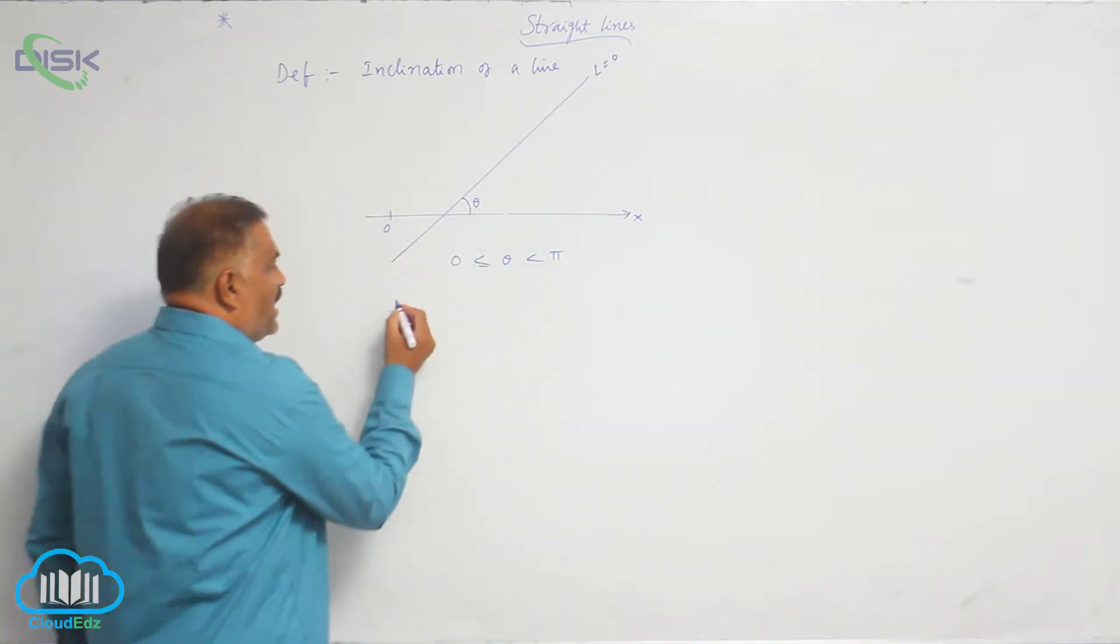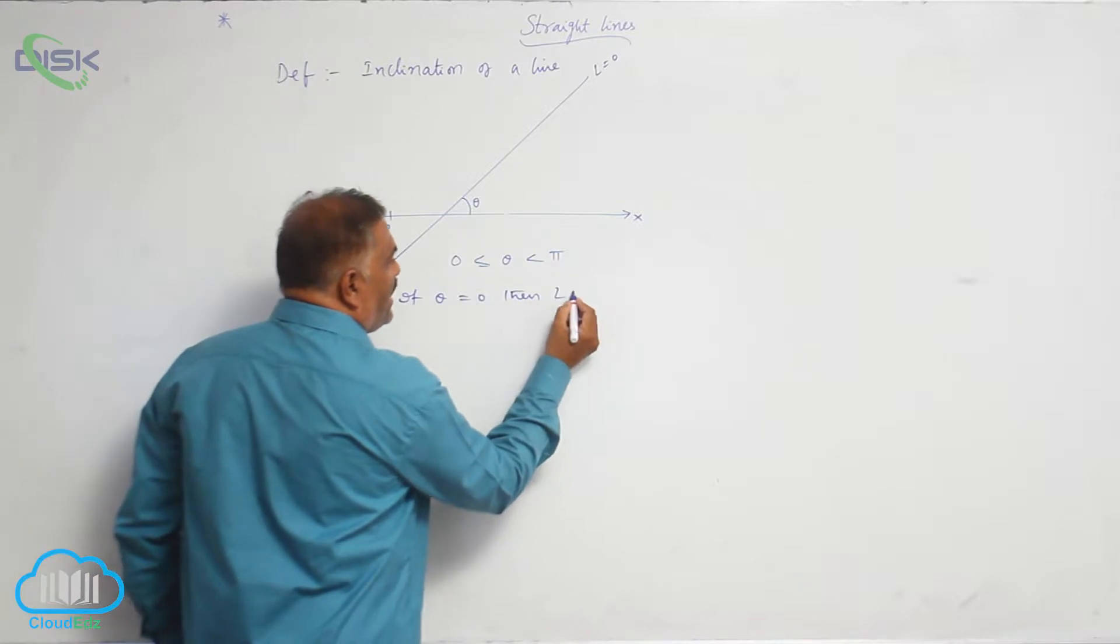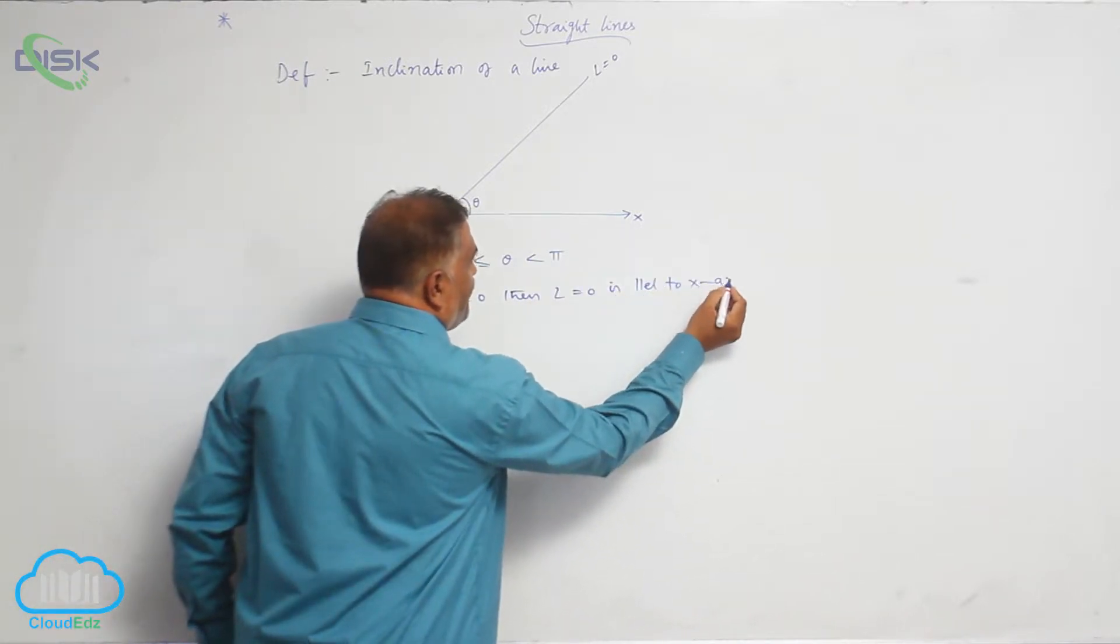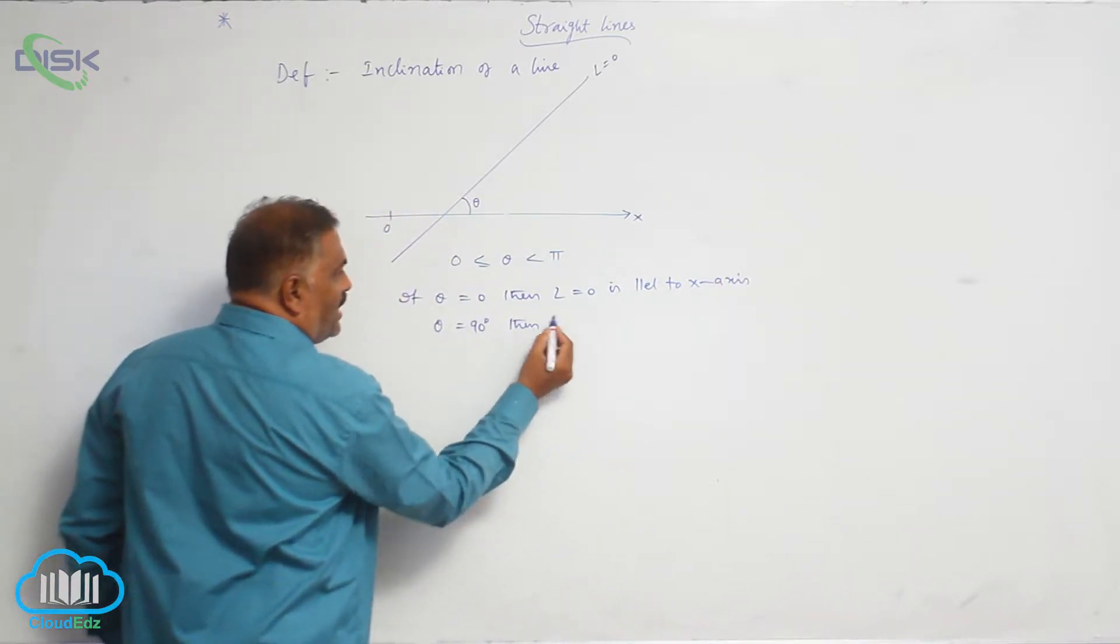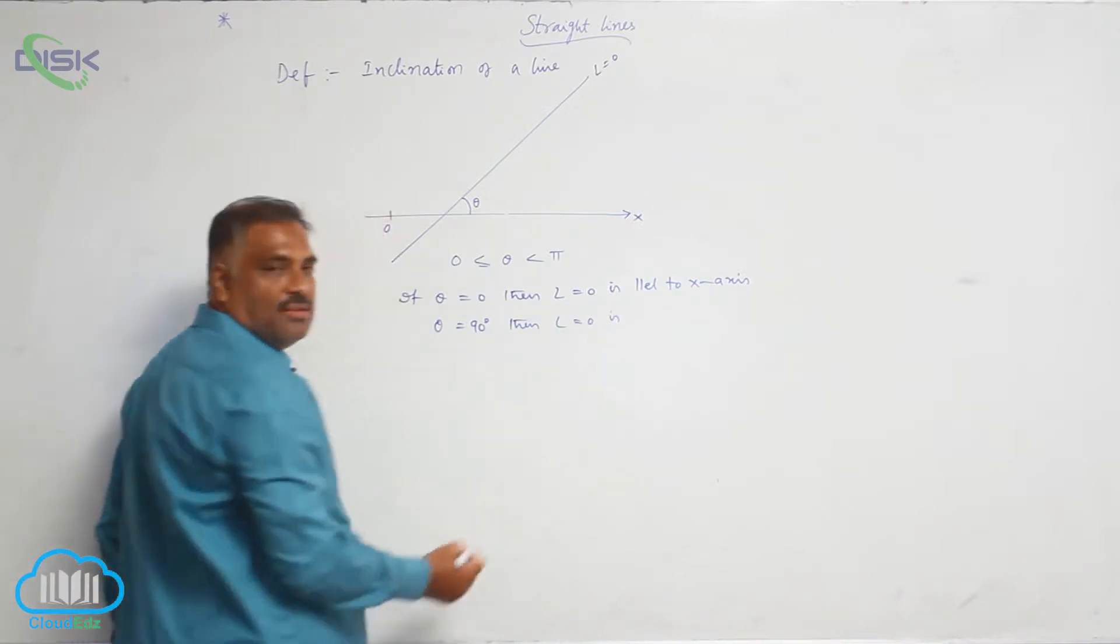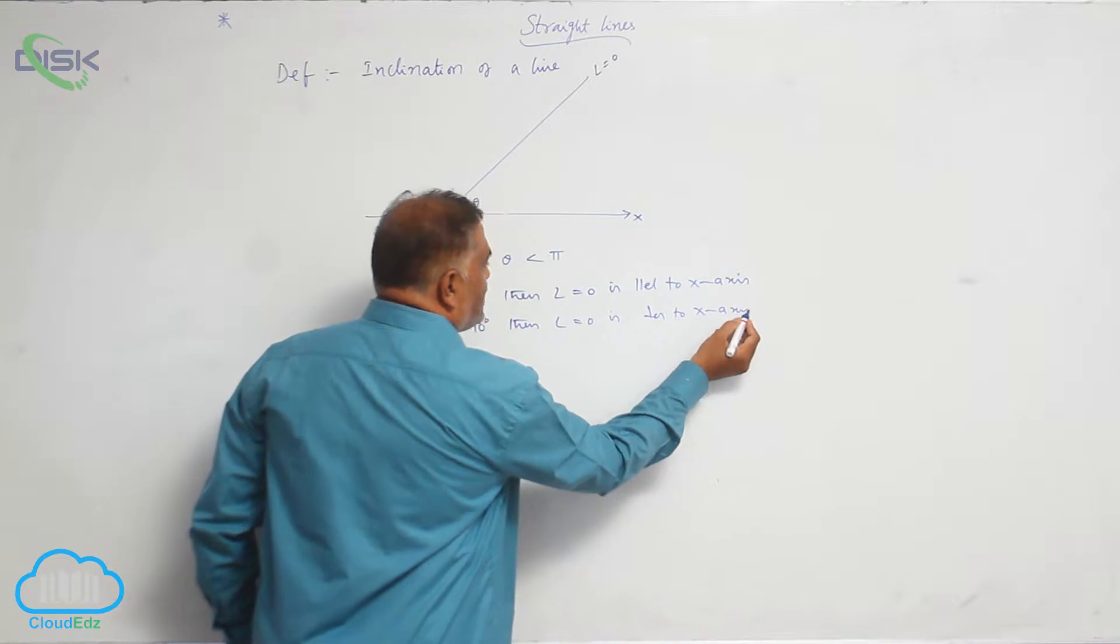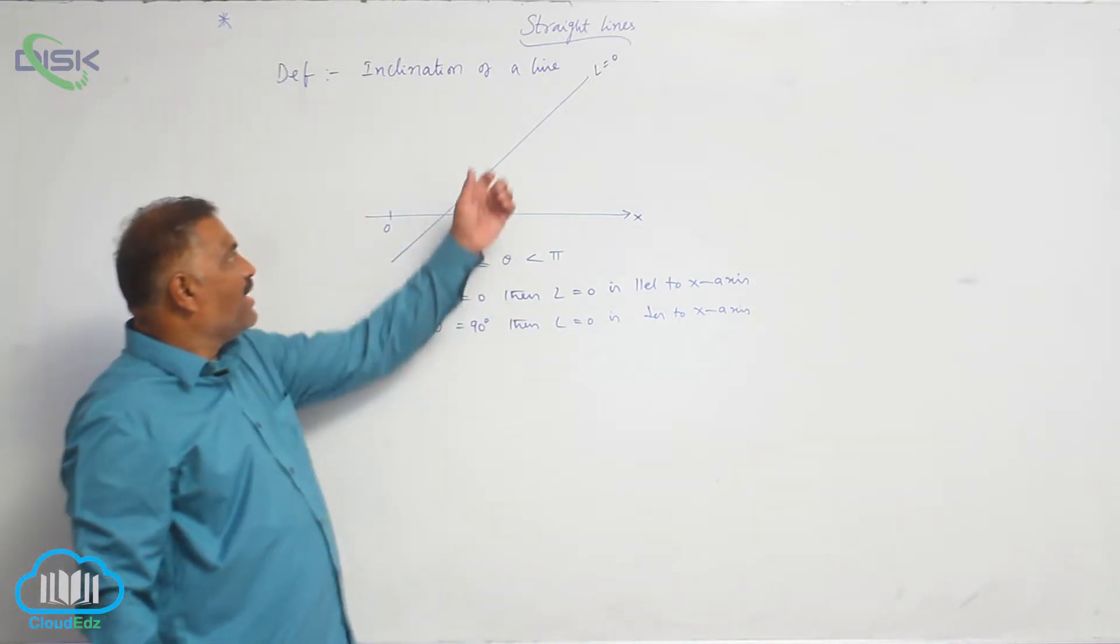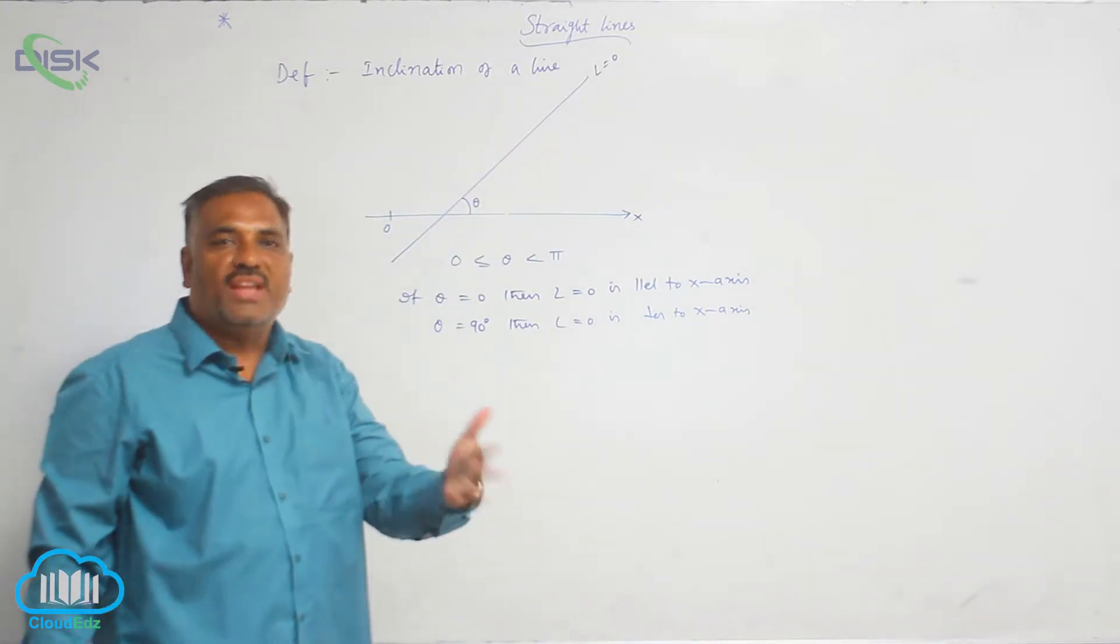And if theta is equal to 0, then line L is parallel to x-axis. And if theta is equal to 90 degrees, then L is perpendicular to x-axis. Now in this case, when theta is equal to 90 degrees, we say that line is perpendicular to x-axis or along y-axis.